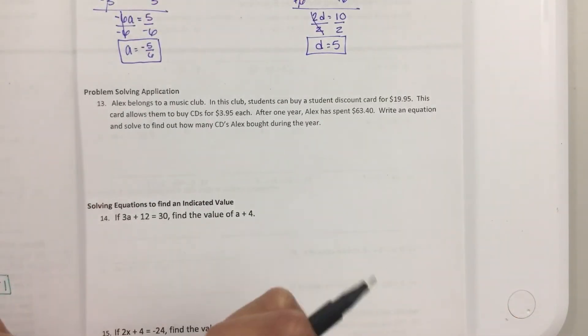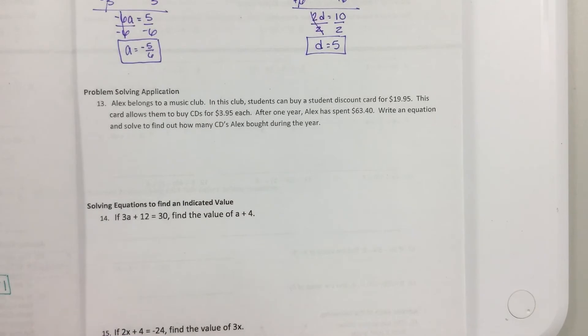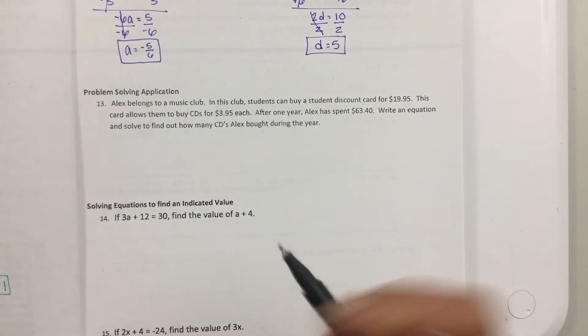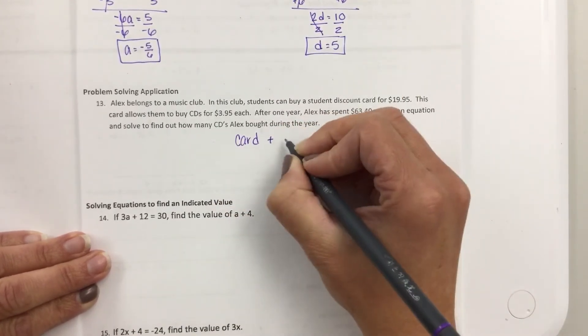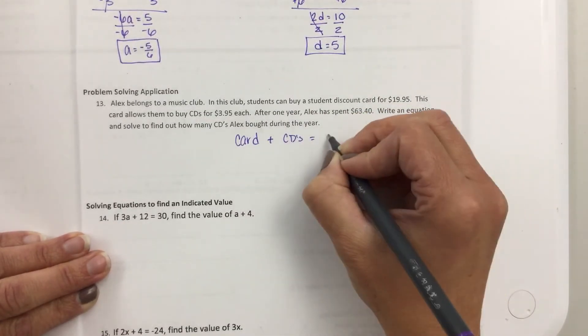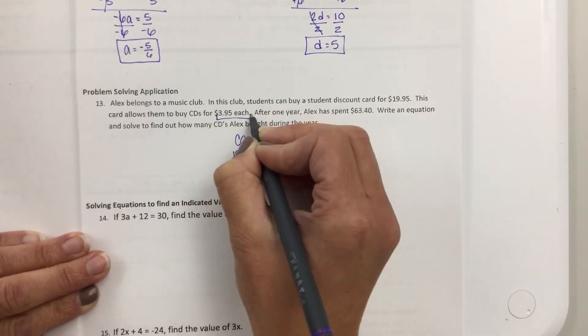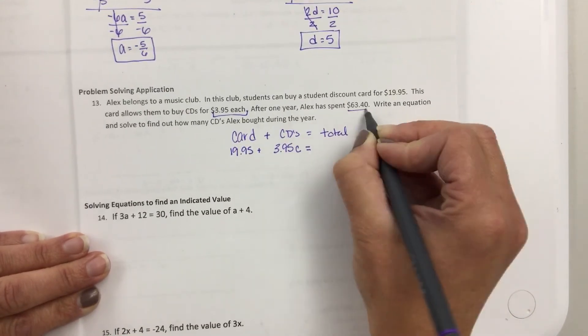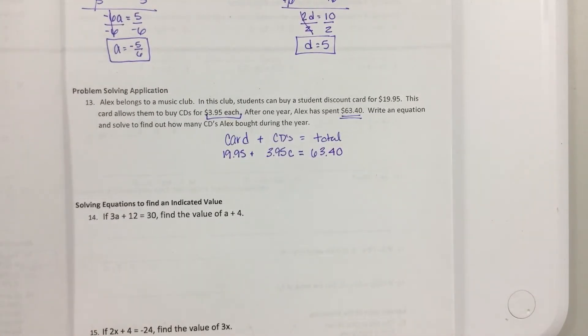So Alex belongs to a music club. In this club, students can buy a student discount card for $19.95. This card allows them to buy CDs for $3.95 each. After one year, Alex has spent $63.40. Write an equation and solve how many CDs Alex bought during the year. So he can buy a card. So the card plus the CDs equals the total. So the card is $19.95. We know that. And the cost of a CD is $3.95 per CD. Equals the total. And he spent $63.40. So I kind of like to write it out in words before I try to make an equation.